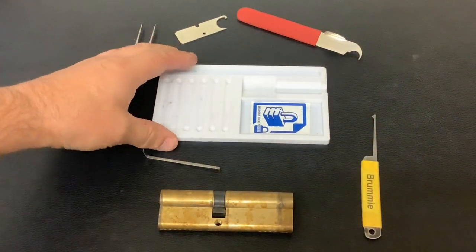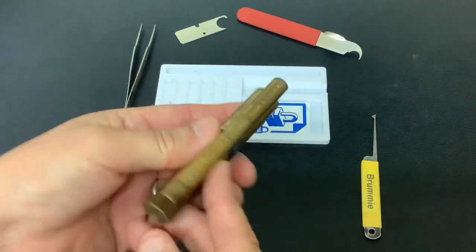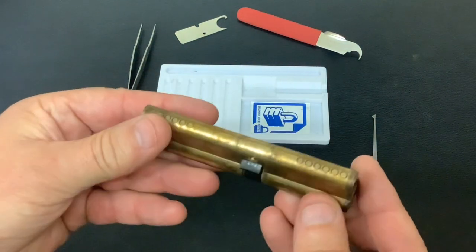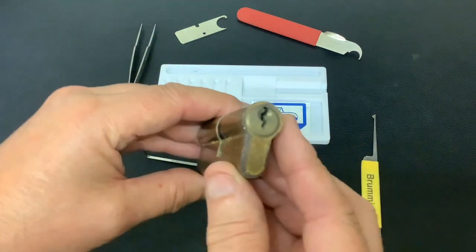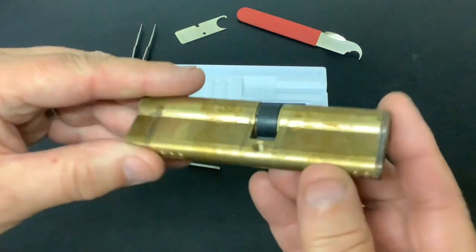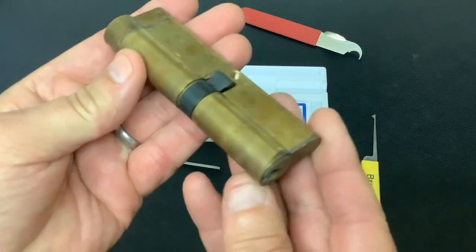You can see I've got my pinning tray out, which means I'm going to have a go at picking and gutting a lock. If you've watched any of my previous videos, you'll know full well that when it comes to gutting locks, I'm not the best. Now, this is an unbranded six-pin euro cylinder. I've got no key for it.